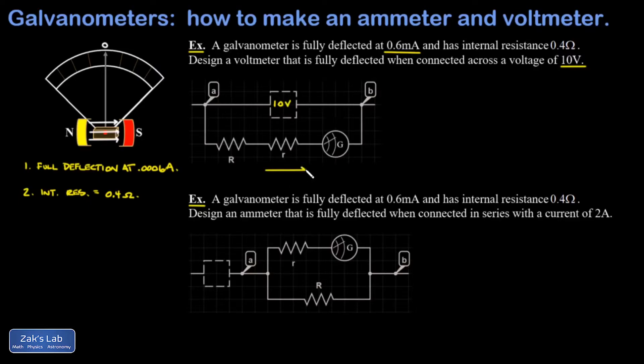When we hook it in parallel across this potential difference of 10 volts, we get full deflection, that is, a current of 0.0006 amps. If I just hook the galvanometer up to this 10 volt potential difference without adding some extra resistance to it, I would end up pulling a huge current.